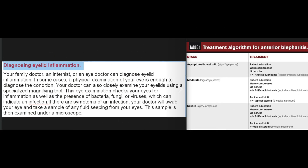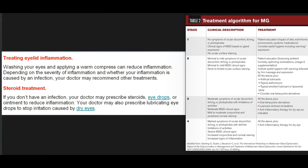These symptoms can also indicate a serious eye infection — you should treat these symptoms as an emergency and see your doctor right away. Diagnosing eyelid inflammation: Your family doctor, an internist, or an eye doctor can diagnose eyelid inflammation. In some cases, a physical examination of your eye is enough. Your doctor can also closely examine your eyelids using a specialized magnifying tool, checking for inflammation as well as the presence of bacteria, fungi, or viruses.